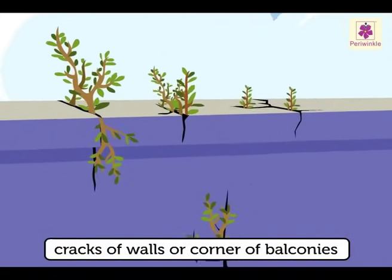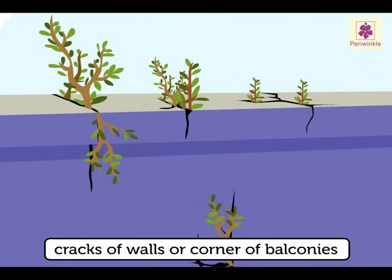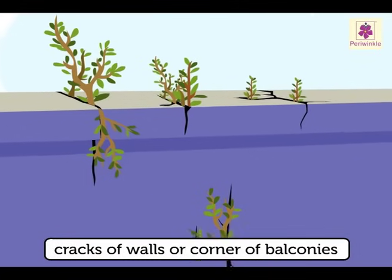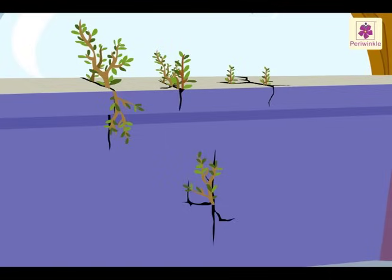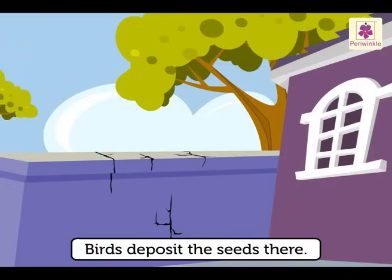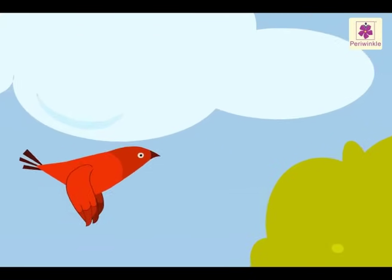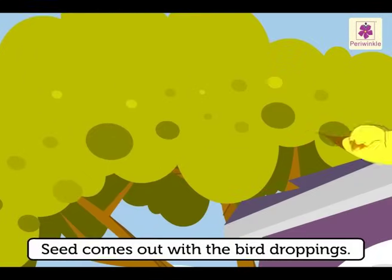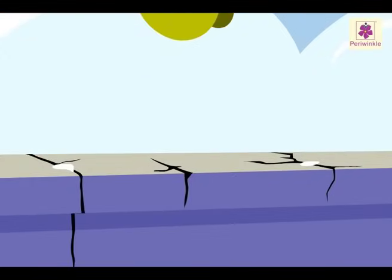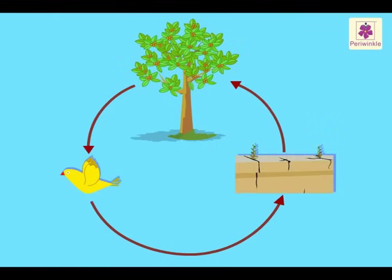We often see small peepal or banyan plants growing from the cracks of the walls of buildings or at the corner of balconies. But how do the seeds of these plants get there? Birds deposit the seeds there — birds eat the fruits of peepal and banyan, they digest the fruits, but the seed comes out with the bird droppings. If it falls on a crack in the wall and gets a little moisture, it grows into a small plant.